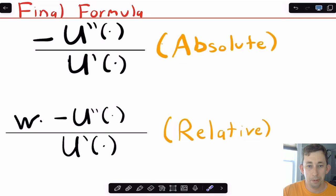There's another measure, which is the Arrow-Pratt measure of relative risk aversion, and all you do for that is you take the absolute measure of risk aversion, you multiply it by X or W or whatever value you want to evaluate the risk aversion at.